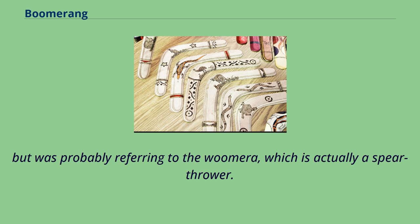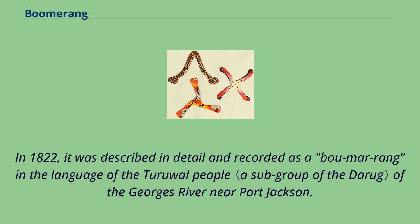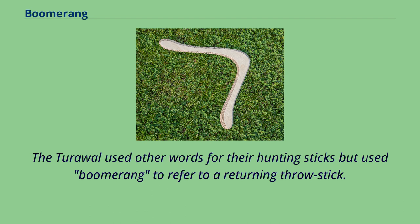An anonymous 1790 manuscript on Aboriginal languages of New South Wales reported 'boomer-writ' as the scimitar. In 1822 it was described in detail and recorded as 'boomerang' in the language of the Turawall people of the Georges River near Port Jackson. The Turawall used other words for their hunting sticks but used 'boomerang' to refer specifically to a returning throw stick.